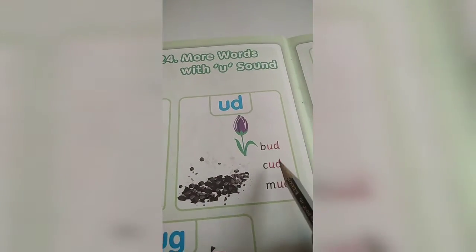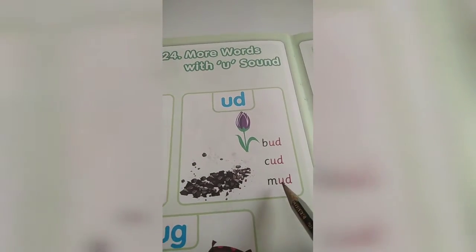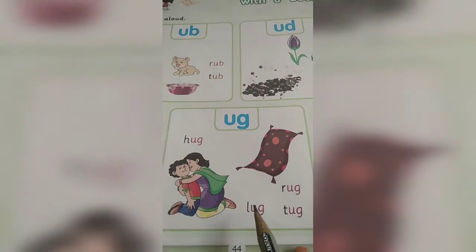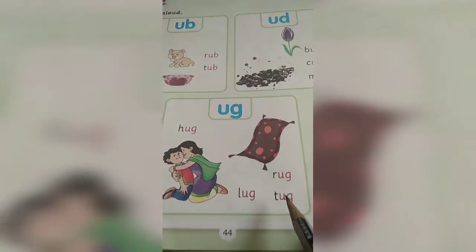Bud, cud, mud — words with the -ud sound. Then: hug, rug, lug, tug — words with the -ug sound.